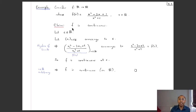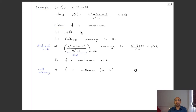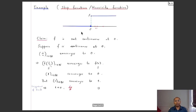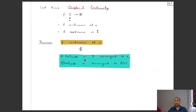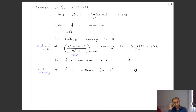We claim this function is continuous everywhere. To show continuity on all of ℝ we show continuity at each point c. Suppose xₙ is a sequence converging to c; we want to show f(xₙ) converges to f(c). We examine the denominator: xₙ → c implies xₙ² → c², so xₙ² + 1 → c² + 1, which is positive. So by algebra of limits, 1/(xₙ² + 1) → 1/(c² + 1).